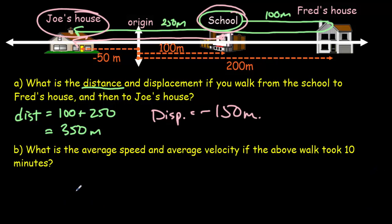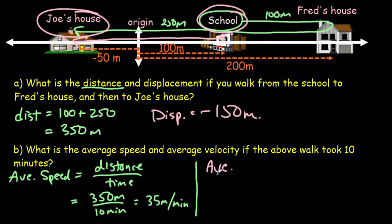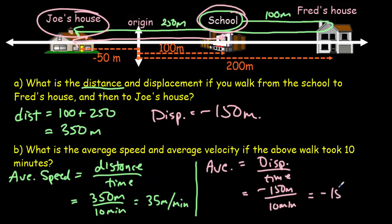The average speed equals the distance divided by time: 350 meters in 10 minutes gives 35 meters per minute. The average velocity is a vector — it includes direction — and equals the displacement divided by time. Our displacement was negative 150 meters in 10 minutes, so the average velocity would be negative 15 meters per minute. He would have ended up in exactly the same place if he had traveled to the left at an average speed of 15 meters every minute.